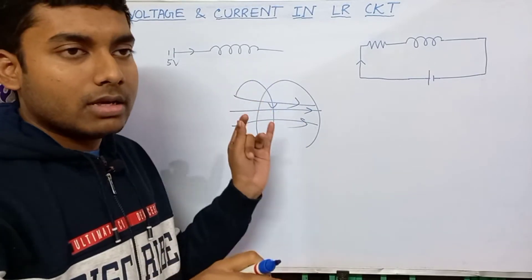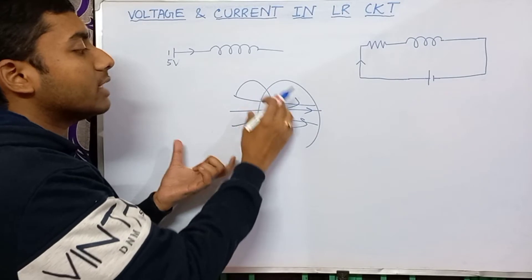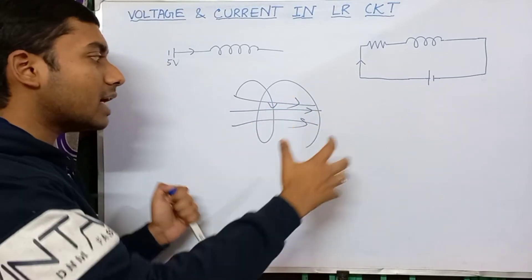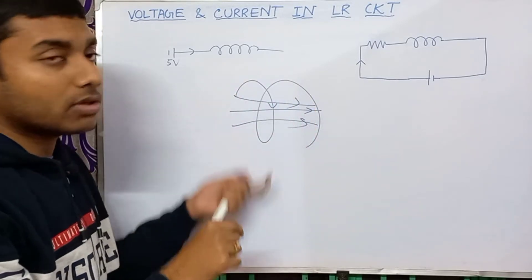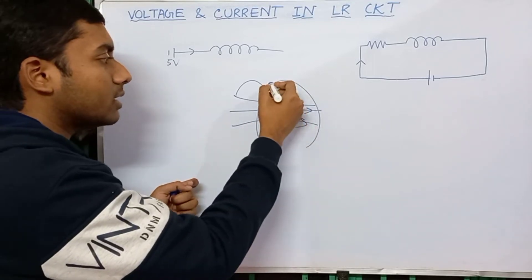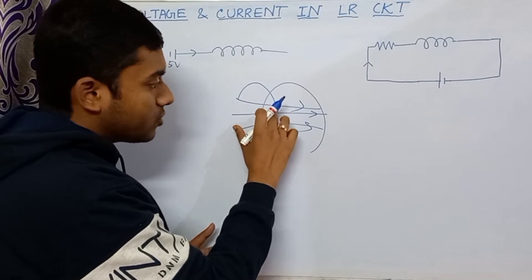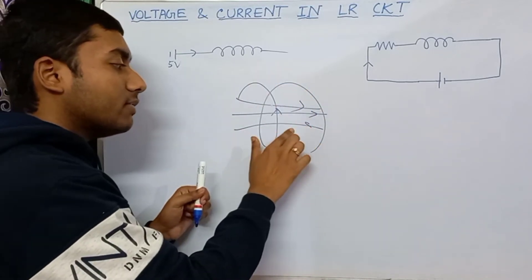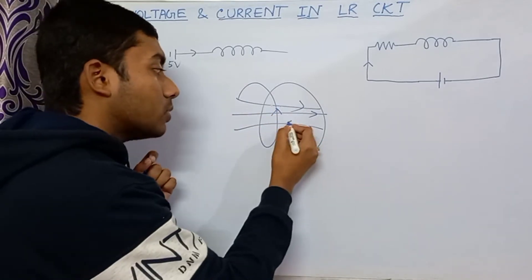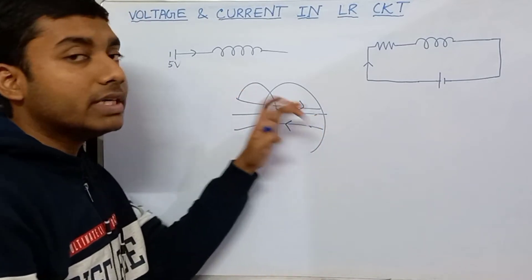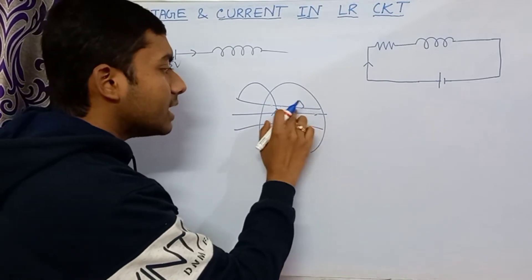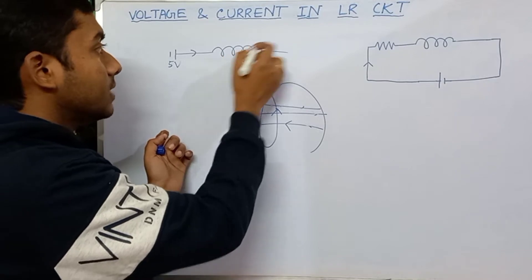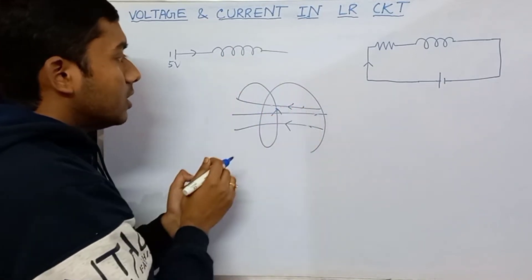The coil carries the current given by the external source. The magnetic field induces a field in the coil in the opposite direction — the induced current in the coil is in the opposite direction. That is why we use the right-hand thumb rule. The magnetic field induced is opposite to the external magnetic field. The induced flux opposes the external magnetic field. That is why the inductor opposes change in current.